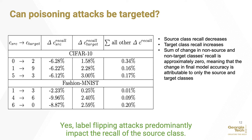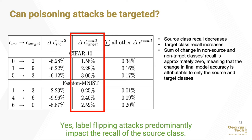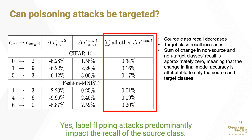Now that we've established that federated learning is vulnerable, our next question investigates how attackers can implement an attack — specifically, can they craft a targeted attack where the impact is limited to just the source and target classes. In our experiments, the change in source class recall was negative, as shown in column 2, and the change in target class recall was positive, as shown in column 3. By summing the change in recall of all other classes, shown in column 4, the impact is negligible, with the 1-to-3 scenario in Fashion MNIST leading to approximately 0% change in accuracy for other classes. Targeted label flipping attacks against a specific source and target class are therefore limited in scope and do not significantly impact other classes.